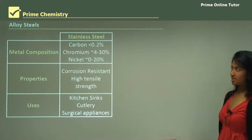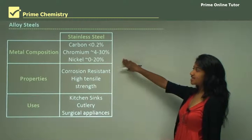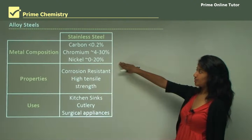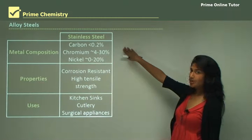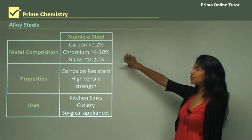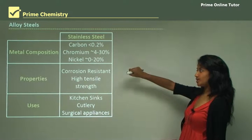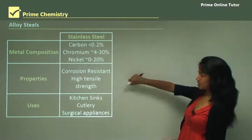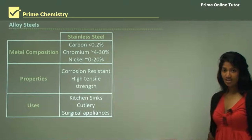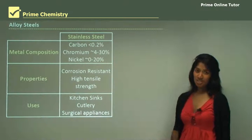Now we'll be looking at alloy steels, of which there are two types. The first is stainless steel, which has a metal composition of carbon, chromium, and nickel. The carbon content is relatively low at less than 0.2%, chromium is around 4 to 30%, and nickel is around 0 to 20% — these may vary according to application. Properties include corrosion resistance and high tensile strength, making it very useful for kitchen sinks, cutlery, and surgical appliances.